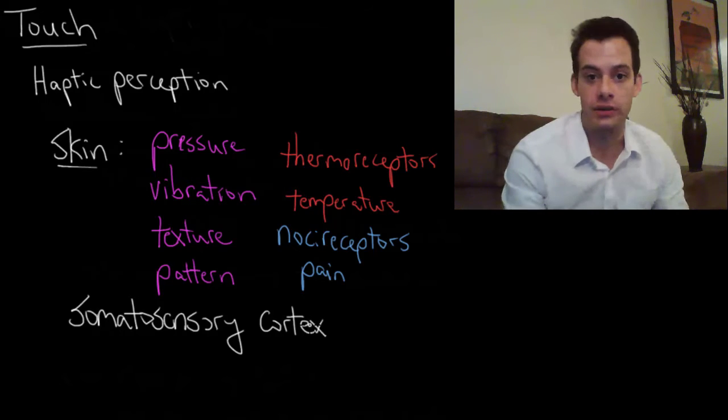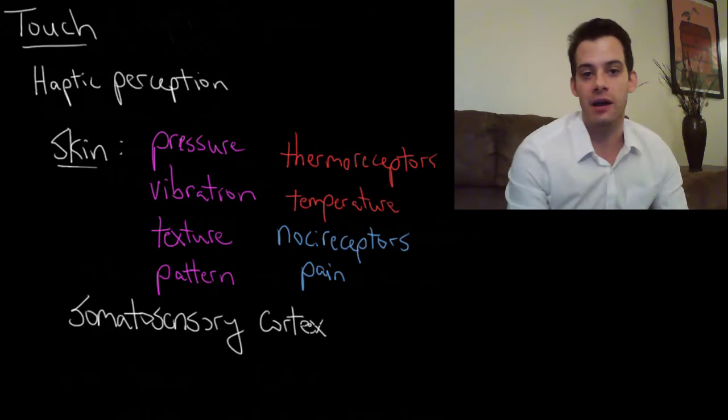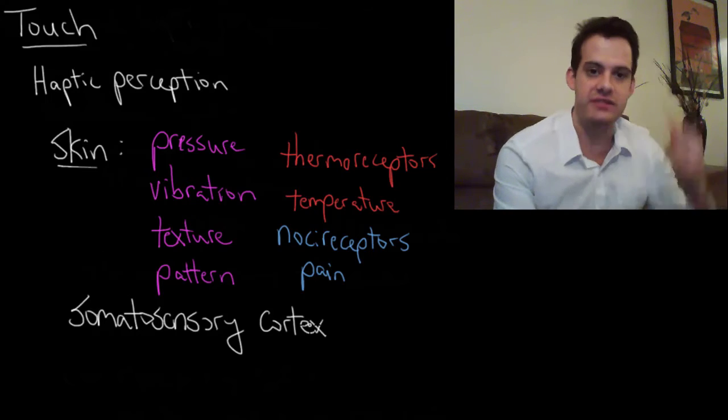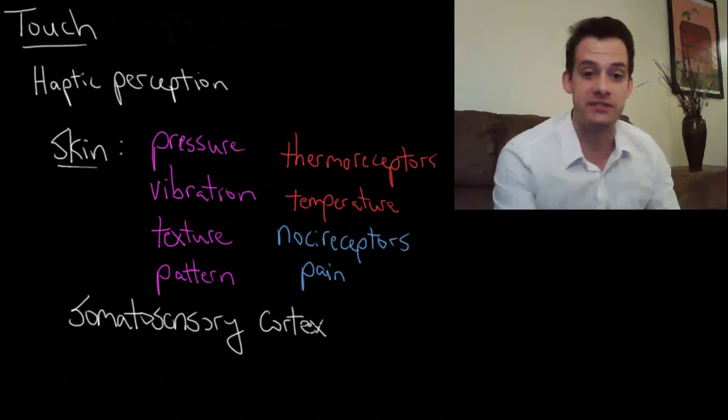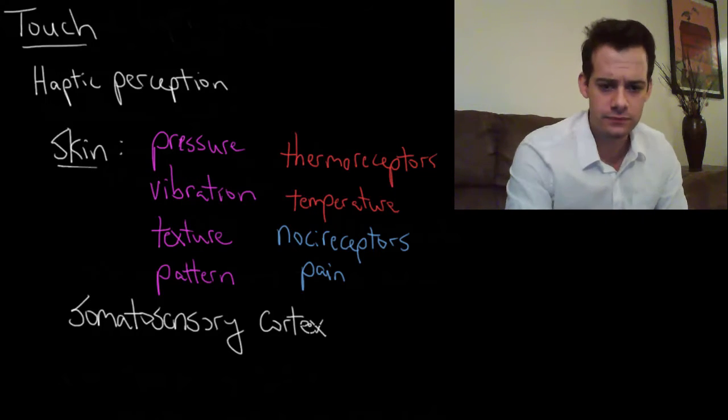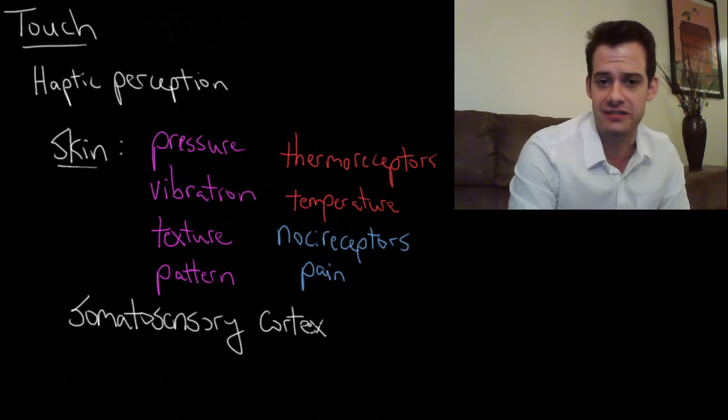So remember this idea that the left side of the brain controls the right side of the body. Well that applies to your skin sensation. So processing the information from the right side of your skin surface happens in your left hemisphere and the opposite is true for the left side of your body happening in the right hemisphere. So remember that the somatosensory cortex is contralateral.